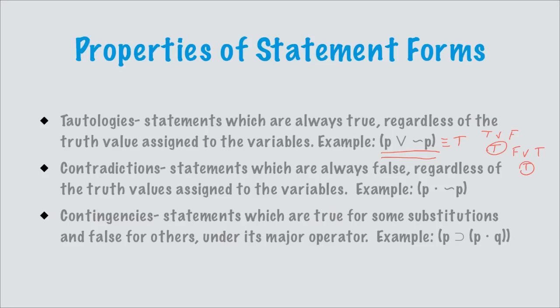The second property a statement can have is a contradiction — statements which are always false regardless of the truth value assigned to the variable. A classic example is 'p and not p.' If p is true, then not p is false, making the conjunction false. If p is false, then not p is true, but that still gives false. No matter what you substitute in, it always comes up false. Other statements have these same properties, even ones that are far more complex.